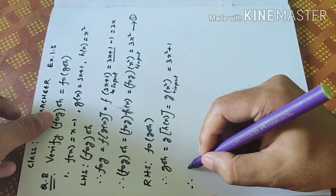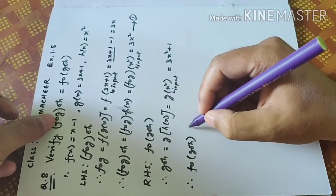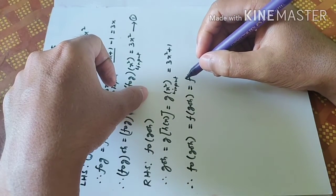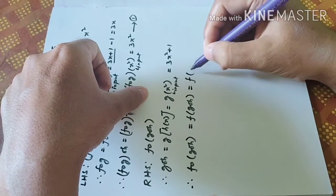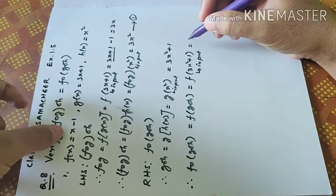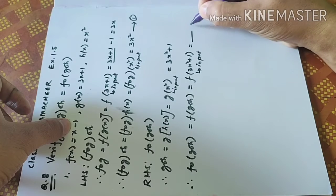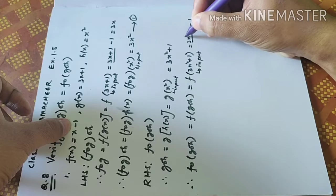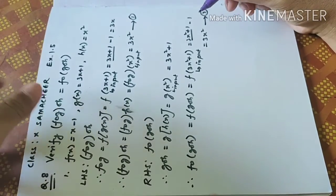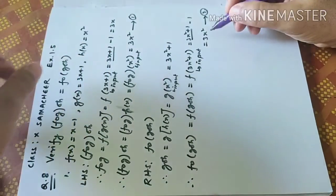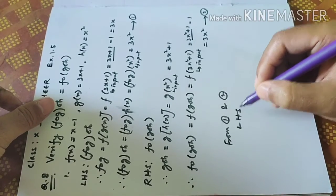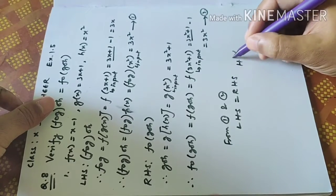Next, find FO(GOH), written as f(g(h(x))). f receives GOH as input, which is 3x square plus 1. f(x) is x minus 1, with input 3x square plus 1: (3x square plus 1) minus 1. The plus 1 and minus 1 cancel, giving 3x square. This is equation number 2, the right-hand side answer. Left-hand side is 3x square and right-hand side is 3x square — both are the same. So from equations 1 and 2, LHS equals RHS. Hence verified.